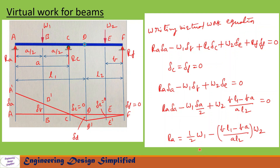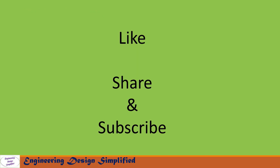The reaction at A is: Ra = (1/2)*W1 - (b*(L1 - a)) / (a*L2) * W2. That's all for today's video. If you like this content, please like, share and subscribe. Thanks for watching.